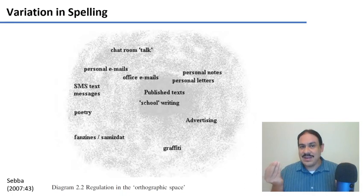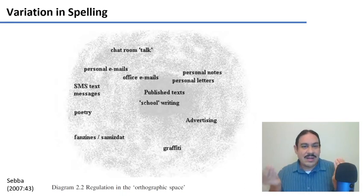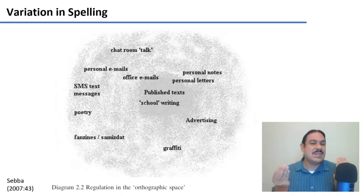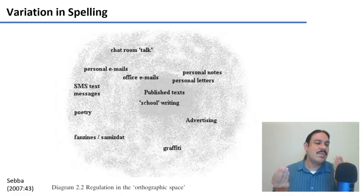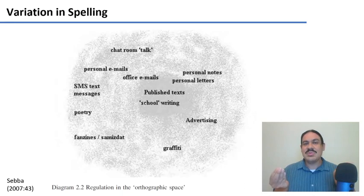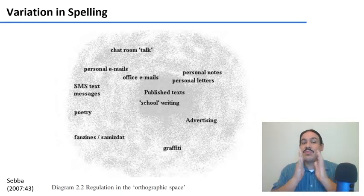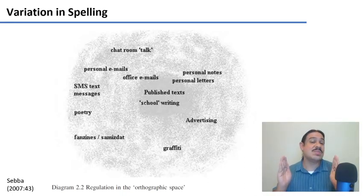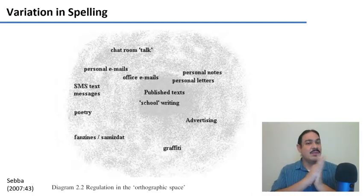We have the same formal/informal distinction in writing. Something like an essay for class would be very formal, while a text message to a friend would be informal. In informal settings, it would be appropriate and even desirable to use covert prestige variants — the non-standard ones — to communicate intimacy or closeness with friends. So writing does have the distinction between formal and informal settings, and it makes sense to have variation in style between the two.